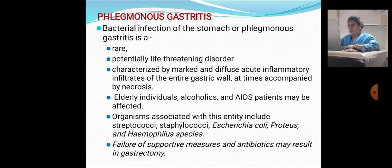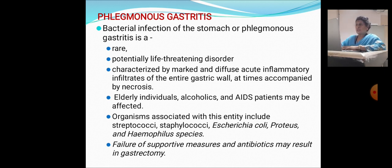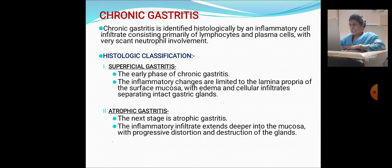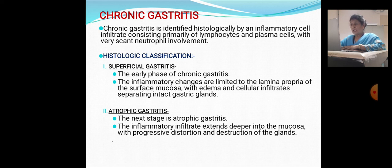Chronic gastritis is identified histologically by inflammatory cell infiltrates consisting primarily of lymphocytes and plasma cells with very scanty neutrophil involvement. Superficial gastritis is the early phase: inflammatory changes are limited to the lamina propria or surface mucosa with edema and cellular infiltrates separating intact gastric glands.